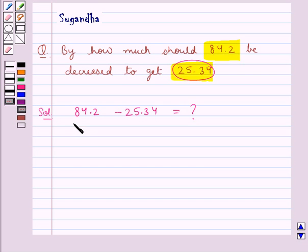So 84.2 could be written as 84.20 minus 25.34. Now these two decimal numbers are like decimals.